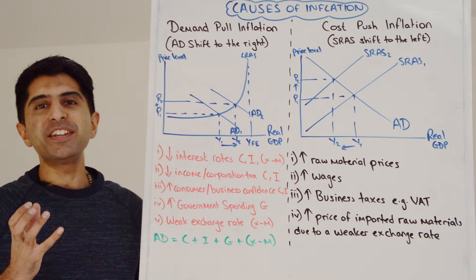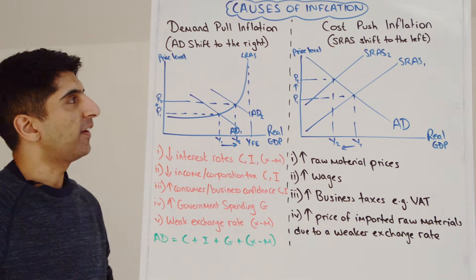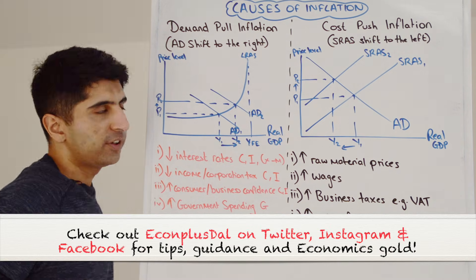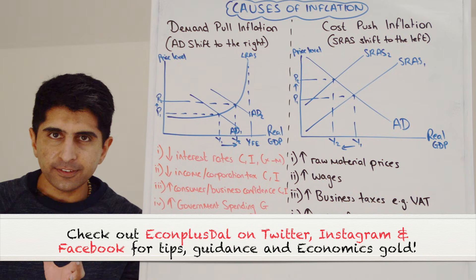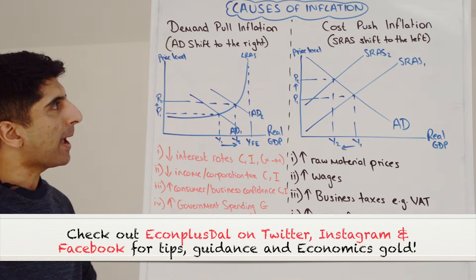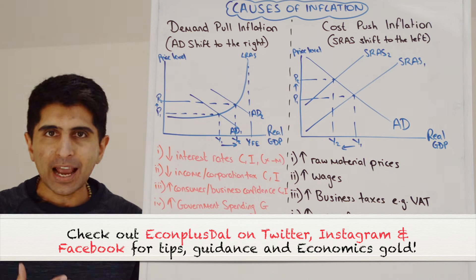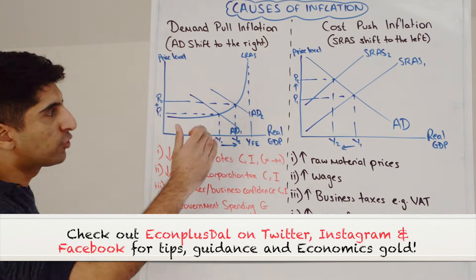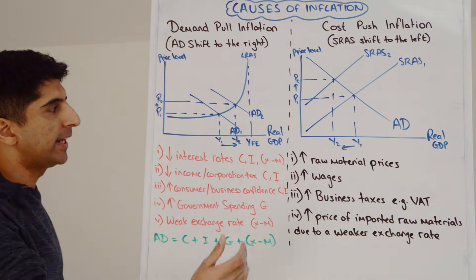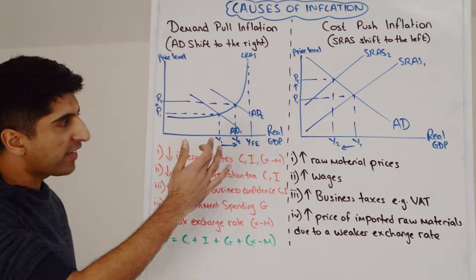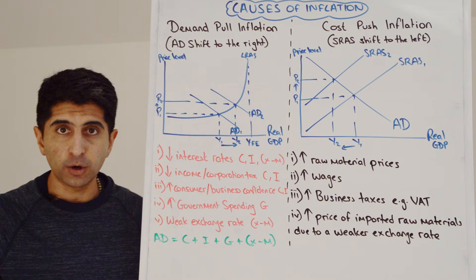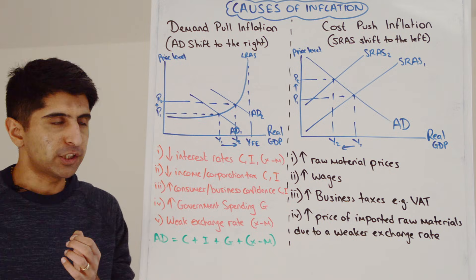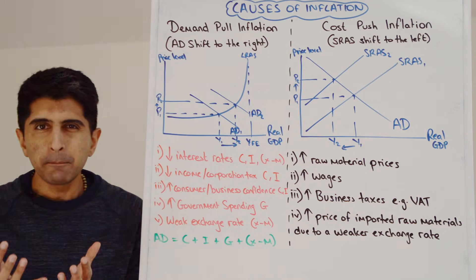Hi everyone, there are two major types of inflation: demand-pull inflation and cost-push inflation. Let's start by looking at demand-pull inflation, which occurs when aggregate demand shifts to the right. I've drawn that on a diagram here, AD1 to AD2, and with that we see higher economic growth, but crucially we see the demand-pull inflationary pressure from P1 to P2.